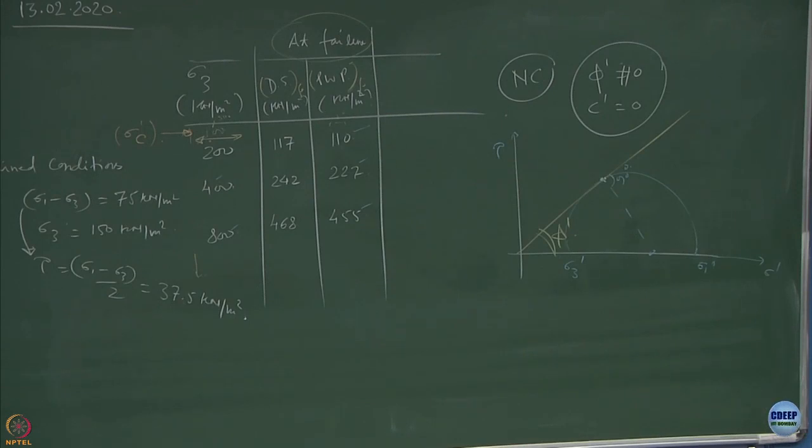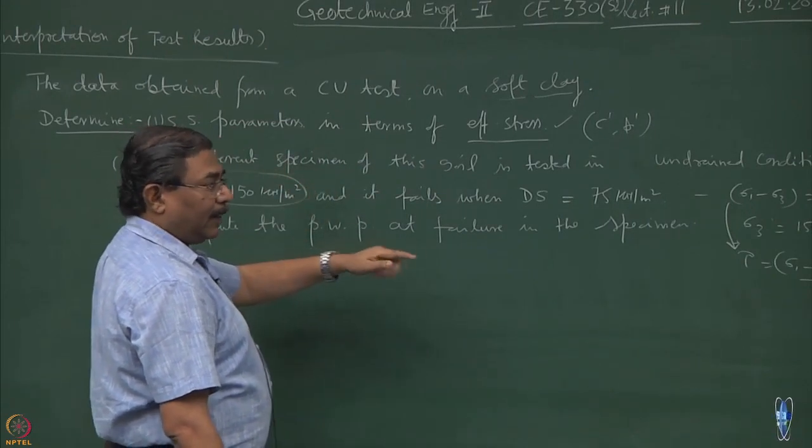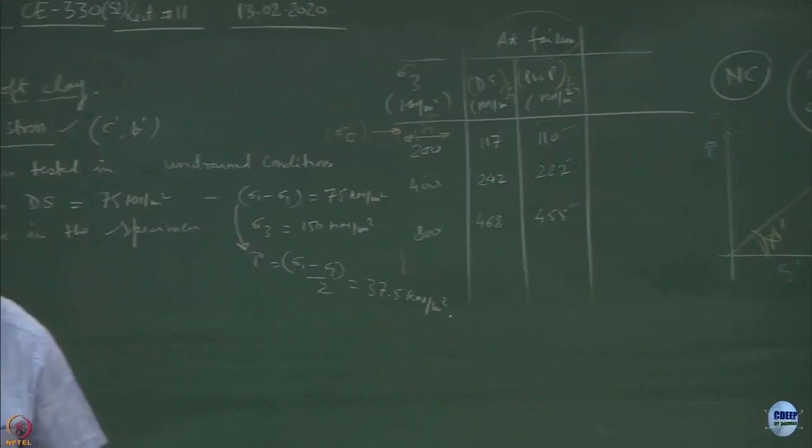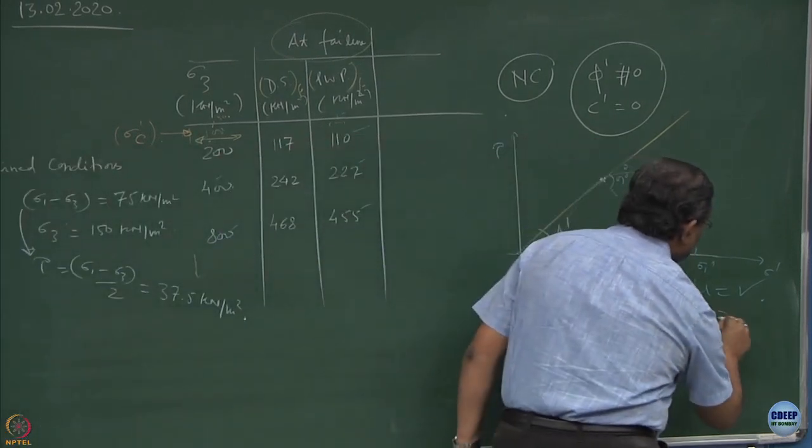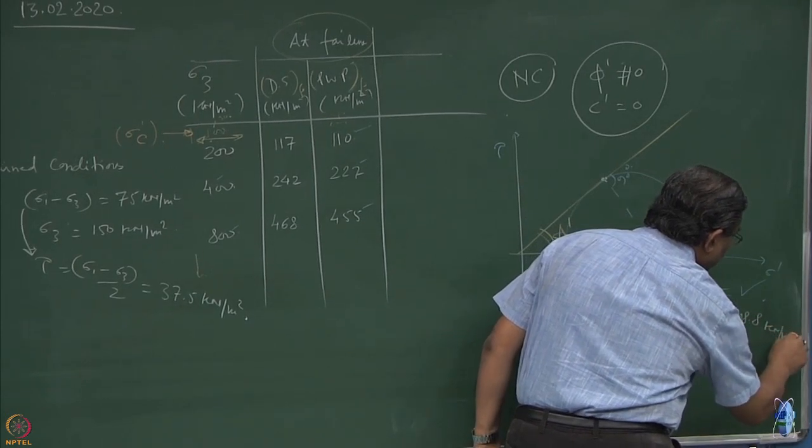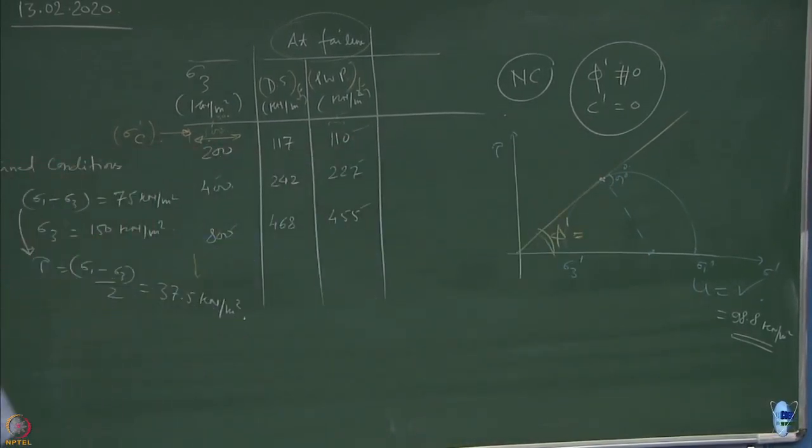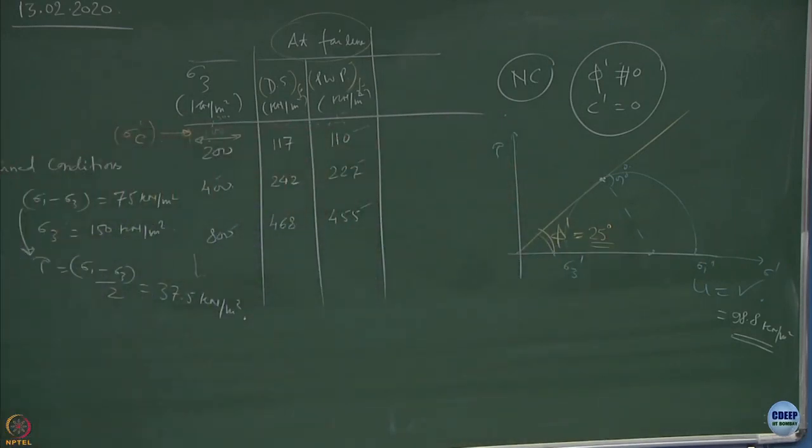Reverse problem. What we did yesterday was a forward problem. Today we've reversed the whole situation. First we identified the material: soft clay, NC material. We know state of stress at failure and from there we're computing the pore pressures. Compute it. That should be a unique number. This comes out to be about 98.8. Phi prime will be equal to 25 degrees. I repeat: friction angles are never written in decimal places. They are always absolute numbers.